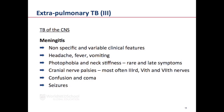In the central nervous system, tuberculosis can present as a meningitic process. The symptoms tend to be nonspecific and variable, and include headache, fever, and vomiting. Photophobia and neck stiffness, very common in other forms of bacterial meningitis, are rare in TB meningitis and tend to occur very late in the disease. Cranial nerve palsies are more common in TB meningitis, most often involving the third, sixth, and seventh nerves. The presence of confusion, coma, and seizures tend to be poor prognostic symptoms.